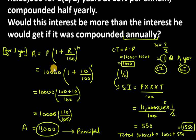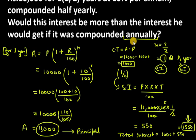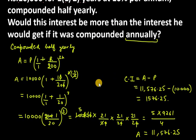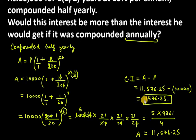Thank you for watching. But wait — the question asked: would this interest be more than if compounded annually? You can see that the interest when compounded half yearly was 1,576.25, compared to 1,550 when compounded annually. So in the half-yearly case, more interest is paid — as compared to the annually compounded case. Thank you for watching.